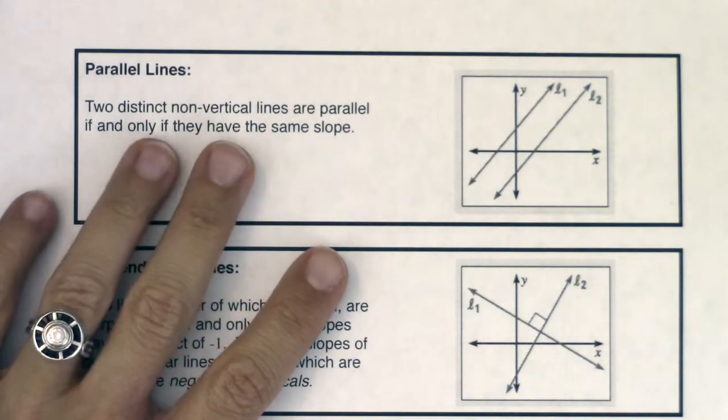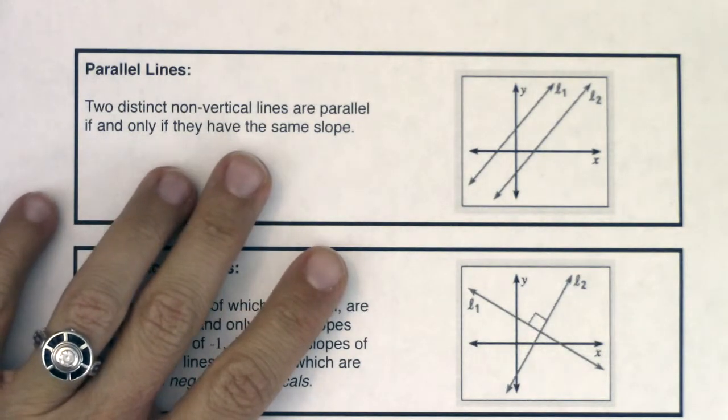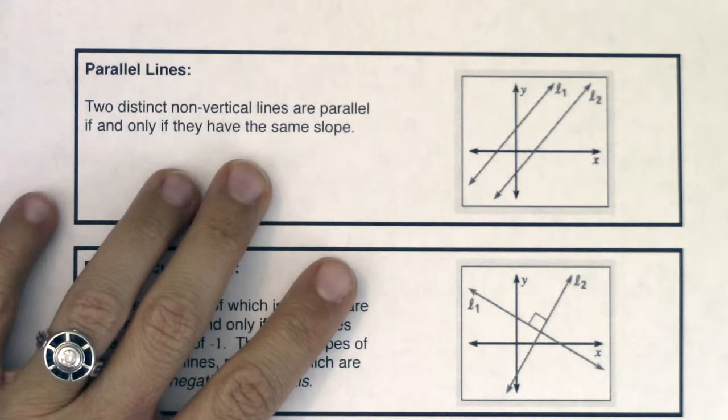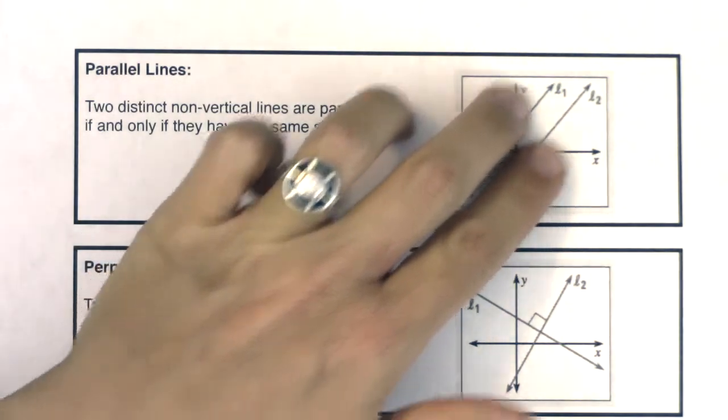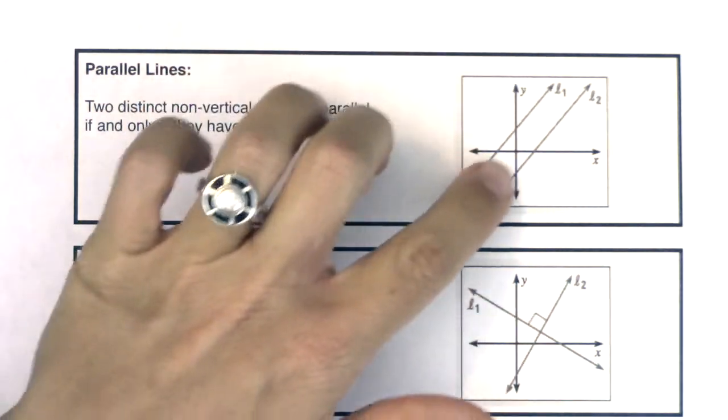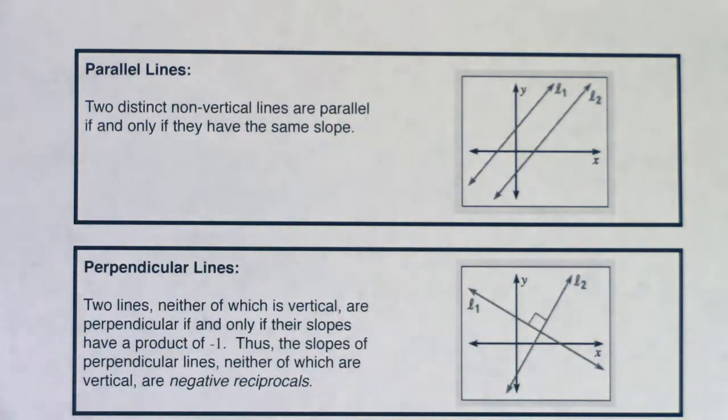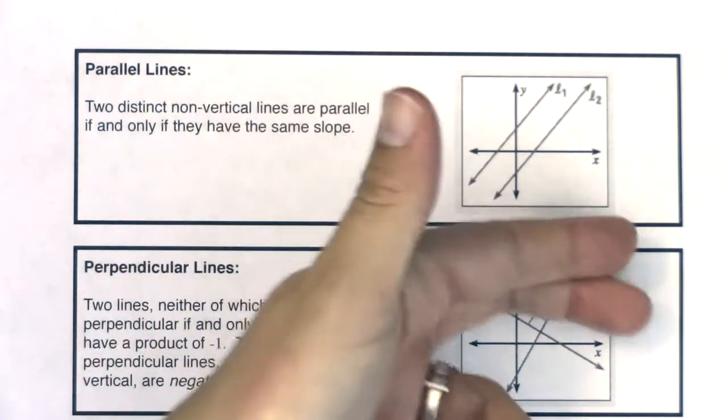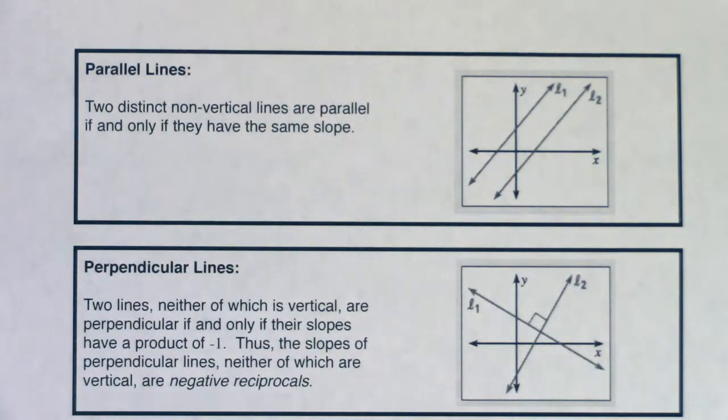If you remember, two distinct non-vertical lines are parallel if and only if they have the same slopes. So graphically parallel lines don't touch, because if you have the same slope your rise over run is the same and you stay increasing or potentially decreasing at the same rate, so you'll never intersect.